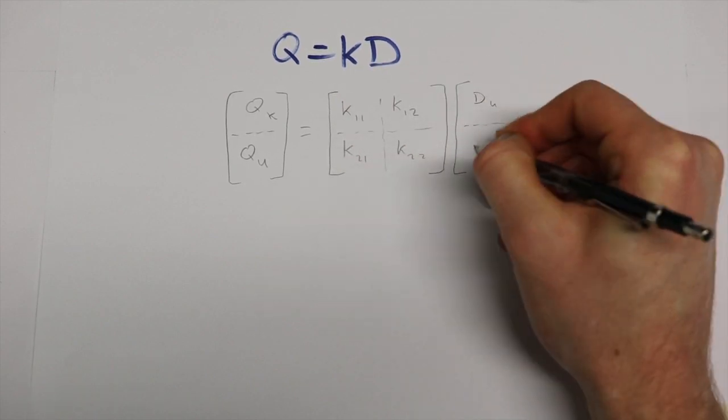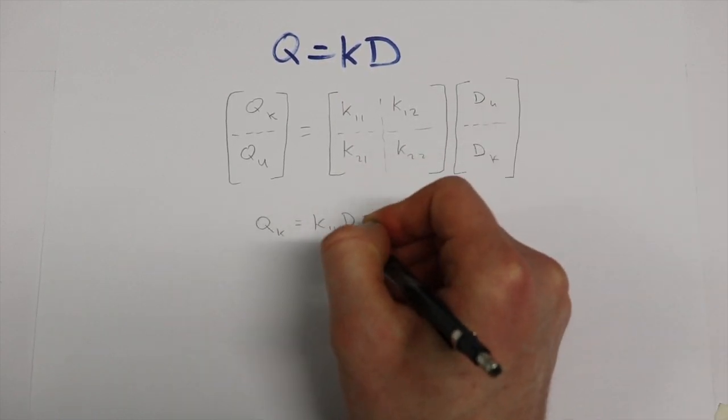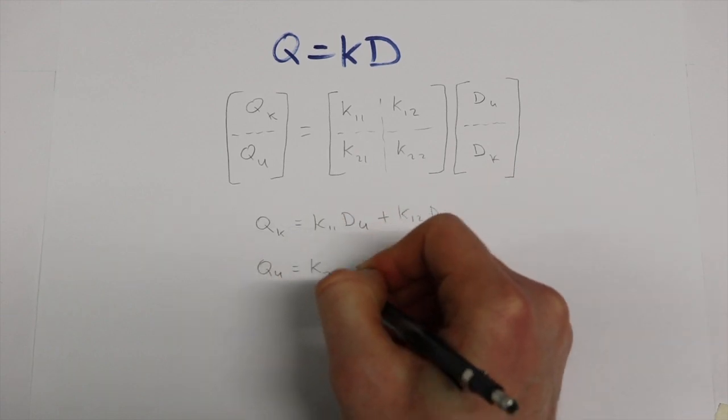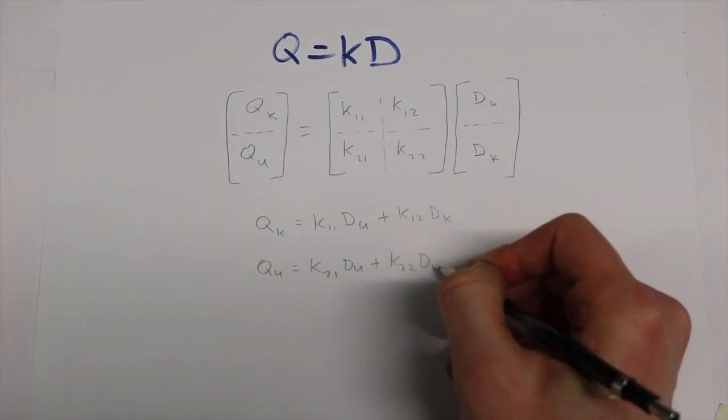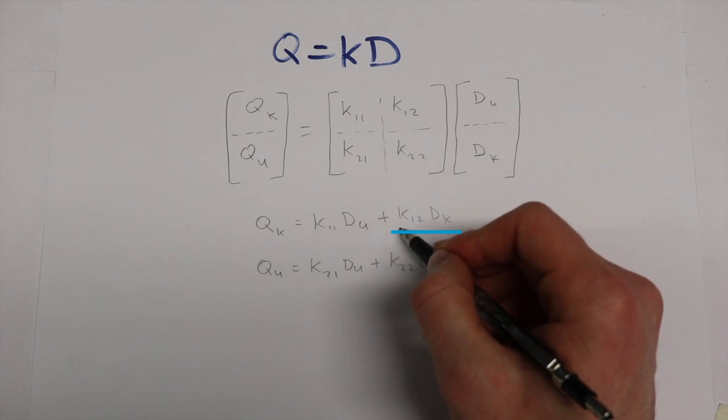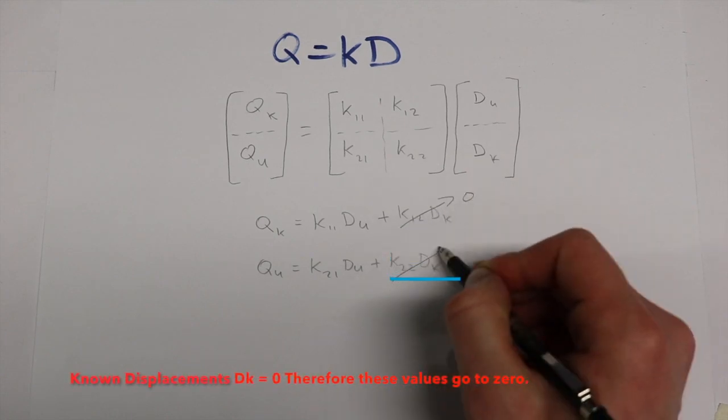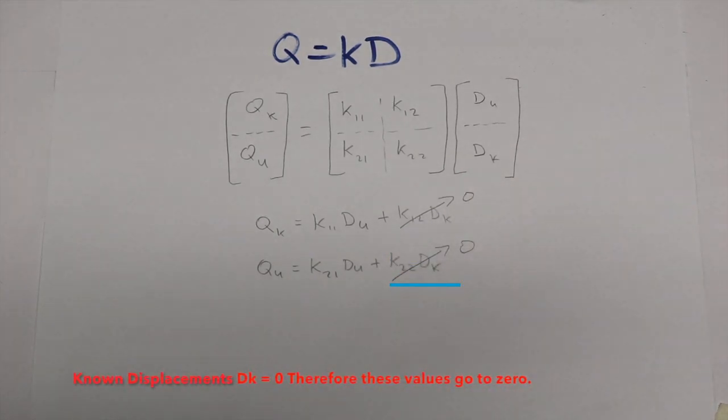We must then partition the matrix according to the known and unknown displacements and forces we have present. Multiplying out the K and D matrices we get an expression for QU and QK in terms of K and D.